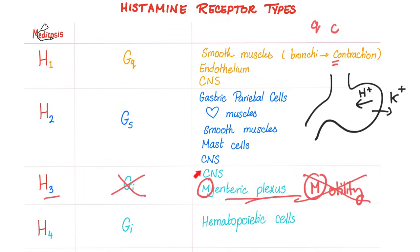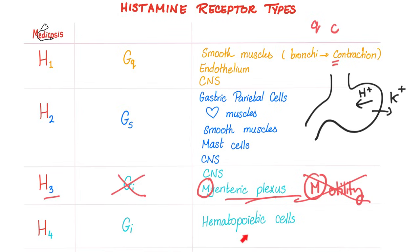Histamine may regulate sleep-wake cycles. Histamine and its H3 receptor have been implicated in Alzheimer's disease, schizophrenia, ADHD, and more. As for the H4 histaminic receptor, it is also GI coupled. We find it in hematopoietic cells in the bone marrow and other locations. H4 receptor is responsible for immune cell recruitment — for example, recruiting neutrophils during acute inflammation, known as neutrophilic chemotaxis. It's also responsible for the sensation of pain and itching, which is why allergies come with itching.